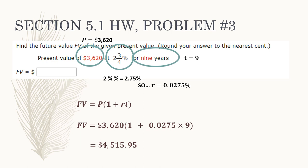So for example, if this were a loan you borrowed from the bank, $4,515.95 is how much you would have to pay back at the end of nine years. That goes in our answer box. Notice that your homework has already put the dollar sign out front, so you don't need to write it again. Now I'm going to show you a screen recording of how I type this in my calculator.